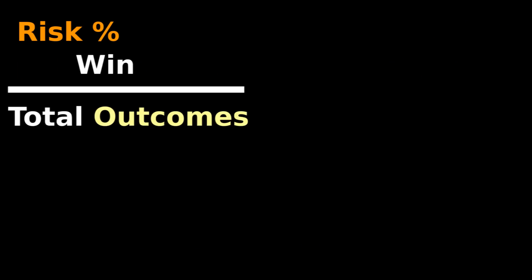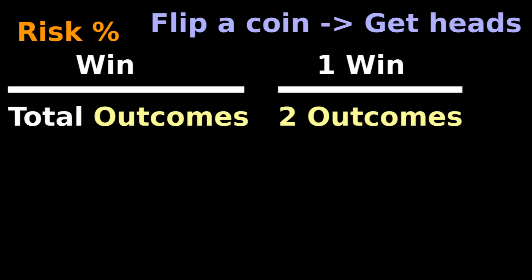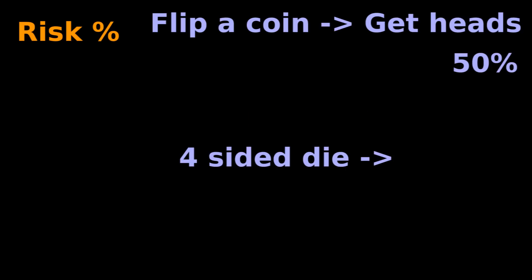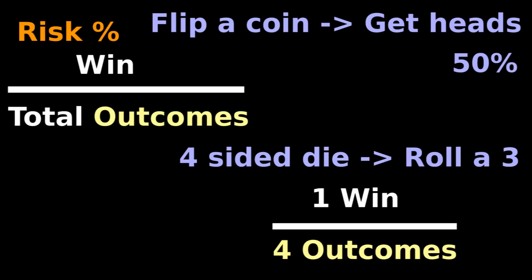Risk is a percent — wins over total possible outcomes. If you flip a coin, the risk that you'll get heads is one win out of two total possible outcomes, or 50%. If you have a four-sided die, the risk that you'll roll a three is one win out of four total possible outcomes, meaning you'll roll a three 25% of the time.